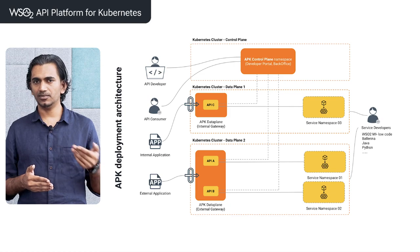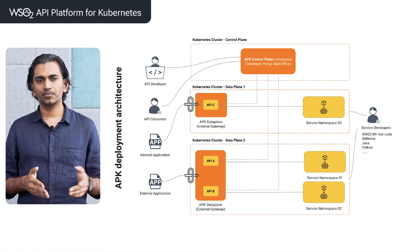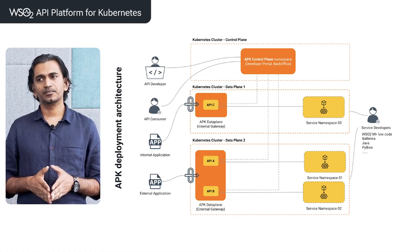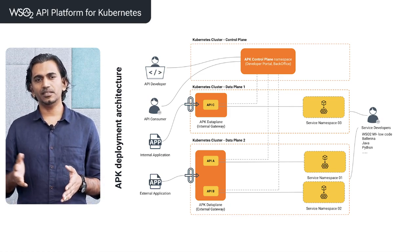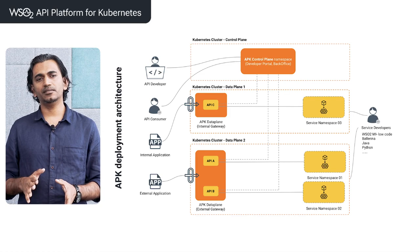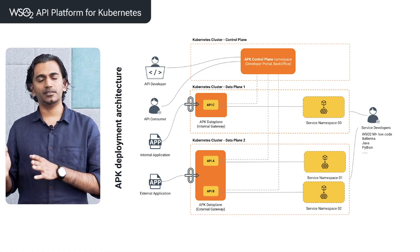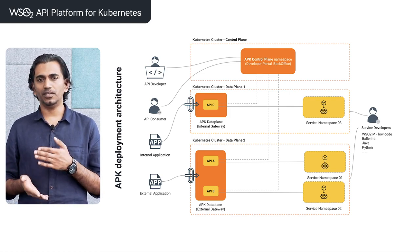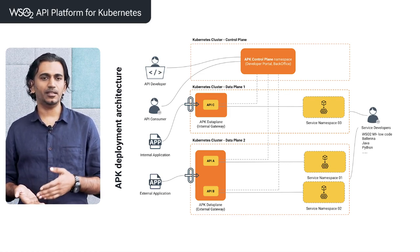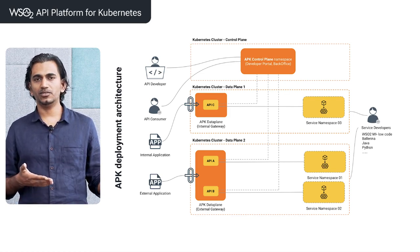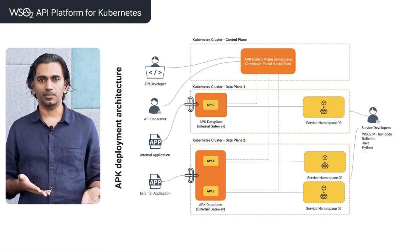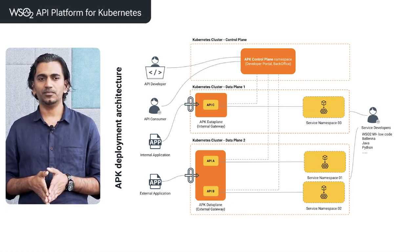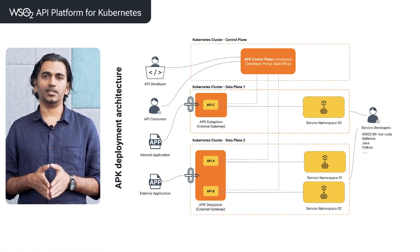How should you scale the system? The other side is how you scale the system for different resource volumes. Basically, you have 10 APIs today and in two years you may have 10,000 APIs. How do you scale the system for that kind of requirement?